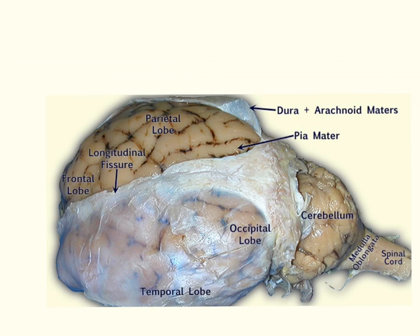The next layer you will see is the very thin pia mater that covers the top of the brain and gives it that shiny appearance. As you see it, it follows through the gyri and sulci and helps hold those blood vessels in place. You'll see some of those blood vessels and some of that dried blood that is present.